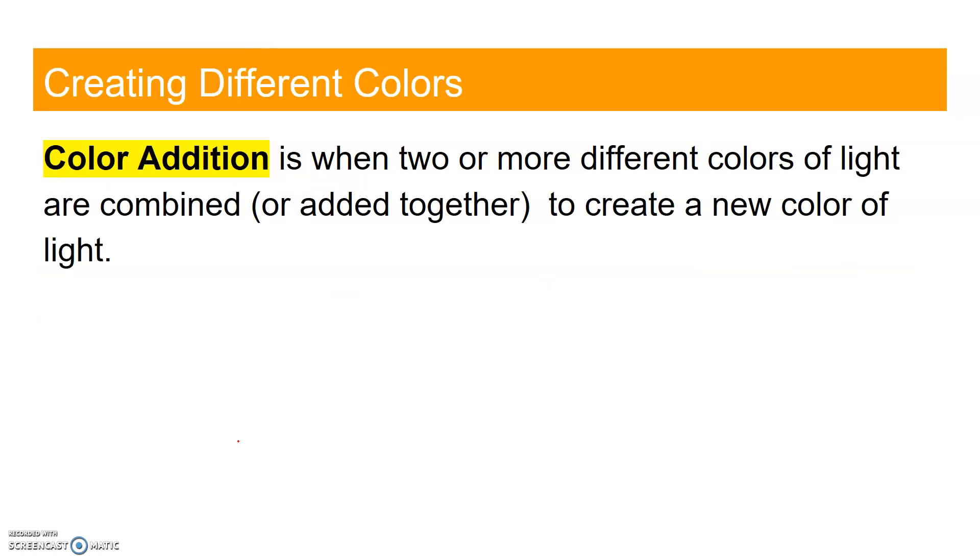So how do we create different colors? There are two ways. The first one is color addition. This happens when two colors of light are combined to create a new color of light.